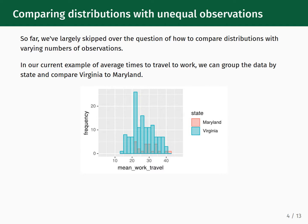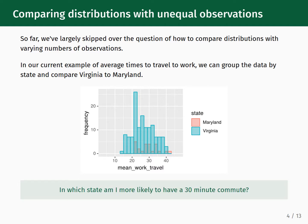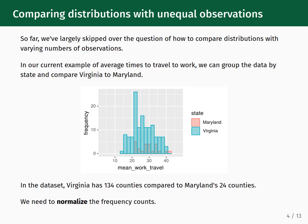Shown here is the histogram for the average travel times for Virginia and Maryland. Based on this visualization, how would you answer the question: in which state am I more likely to have a 30-minute commute? Maybe your gut reaction would be to answer Virginia, because the bars are so much taller in the region of 30 minutes. However, that might not be correct. The disparity in bar heights makes it difficult to meaningfully compare the two distributions. This occurs because Virginia has 134 counties and Maryland has 24 counties, so Virginia has far more data points than Maryland.